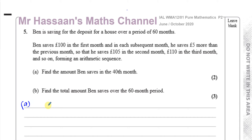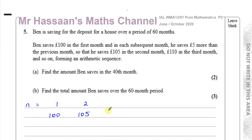For part A, let's look at the sequence in general. When N equals 1, he's saving 100 pounds. When N equals 2, he's saving 105 pounds. In the third month, he saves 110 pounds. Every month he's saving 5 pounds more than he did previously. We've got to find how much he saves in the 40th month, and also how much he saves altogether for the first 60 months.